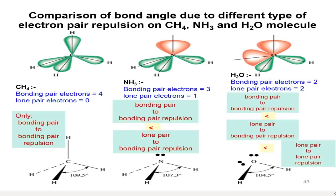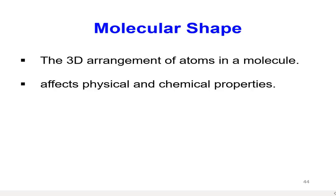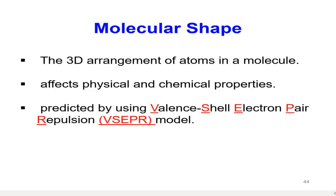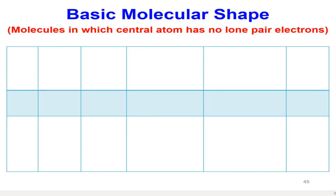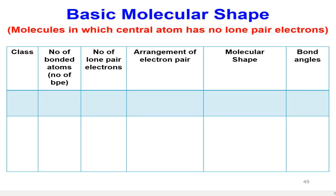The molecular shape is the 3D arrangement of atoms in a molecule. It affects physical and chemical properties, and is predicted using the valence-shell electron pair repulsion model — that is, VSEPR theory. There are five basic molecular shapes, and we are going to focus on molecules in which the central atom has no lone pair electrons. For each basic molecular shape, you need to know its class, number of bonded atoms, number of lone pair electrons, arrangement of electron pairs, molecular shape, and bond angle.